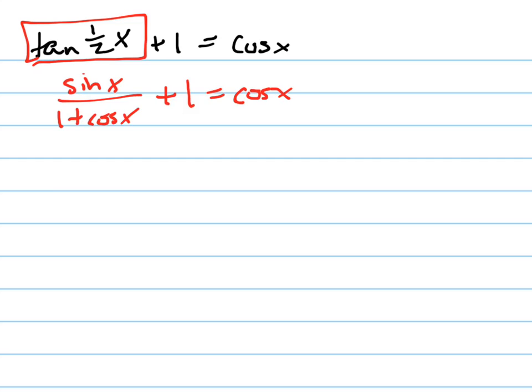The reason I did that is because now what I can do is I can multiply through by that denominator. I'm going to multiply each term, this, this, and this, by 1 plus cos(x).